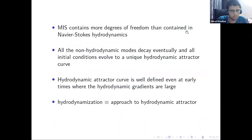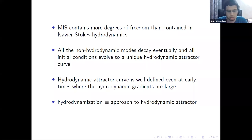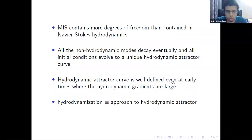MIS contains more degrees of freedom than just the conserved quantities. All extra non-hydrodynamic degrees of freedom decay eventually, and the initial conditions evolve to a unique hydrodynamic attractor curve. This attractor curve is well-defined even at early times where hydrodynamic gradients would be large, because in this setup the hydrodynamic gradient series is essentially a series in powers of 1/w, and at early times those terms are large. But the hydrodynamic attractor is well-defined at all times.